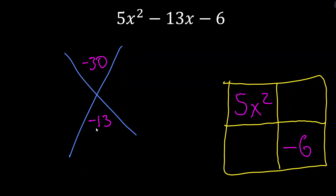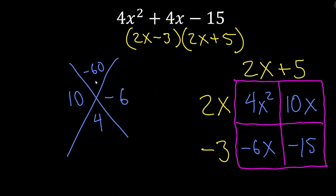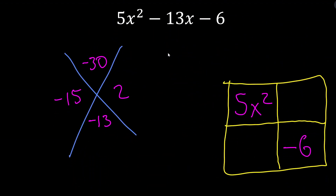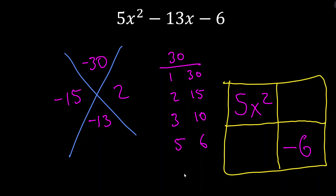I'm thinking of two numbers that multiply to negative 30 but add to negative 13. Let me think — 3 and 10: 3 plus 10 gives 13, but since the product needs to be negative I need one positive and one negative. Ten minus 3 is 7 and negative 10 plus 3 is negative 7 — neither works. Let's try 15 and 2: negative 15 plus 2 is negative 13. That works! With bigger numbers like 30 or even 60, you can list factor pairs off to the side: 1 and 30, 2 and 15, 3 and 10, 5 and 6 — and visually scan them. Totally fine to do that.